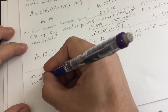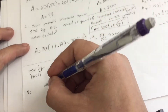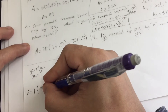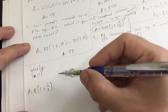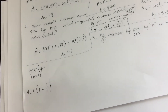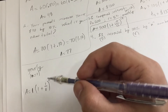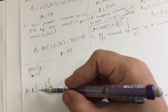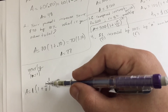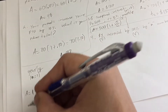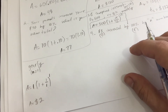Yearly means n equals 1. Our amount A equals 1 times (1 + 1.00/1) to the power of 1 — that simplifies to (1 + 1) to the first power. Using the calculator, this bank gives us $2 after one year — doubling our amount. An excellent deal.